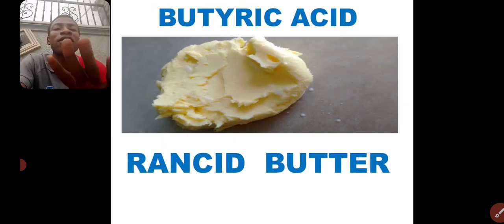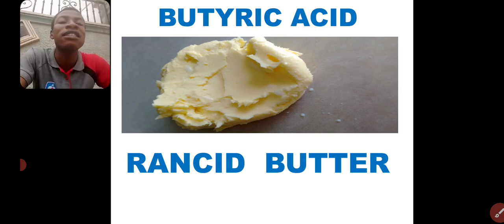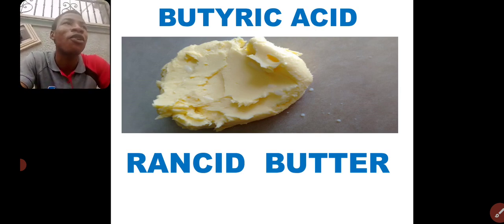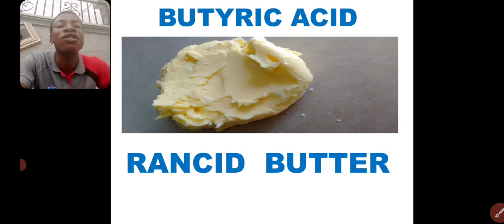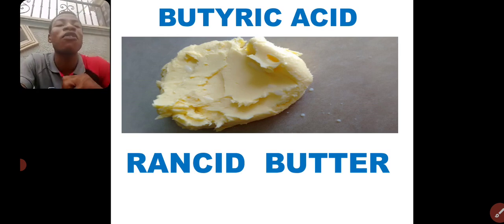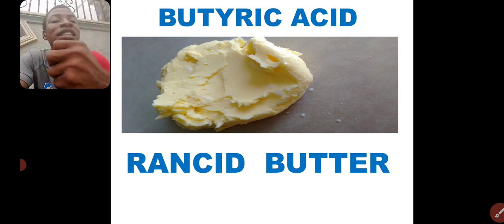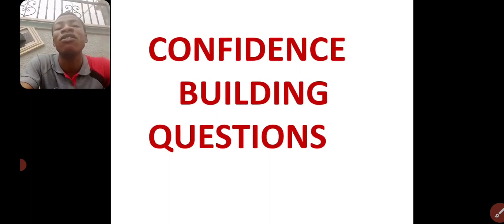Those are the major sources of organic acid. Understand that acids are not just things that destroy or corrode — acids are also useful to the human body, as you can see them in various fruits and various foods. Those are the sources of organic acid. Before we end this class, we are going to take some questions.